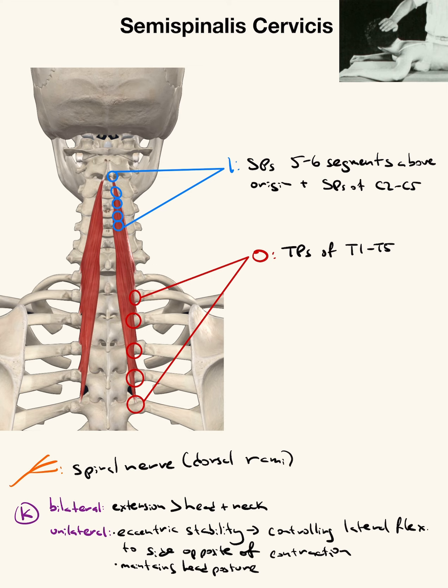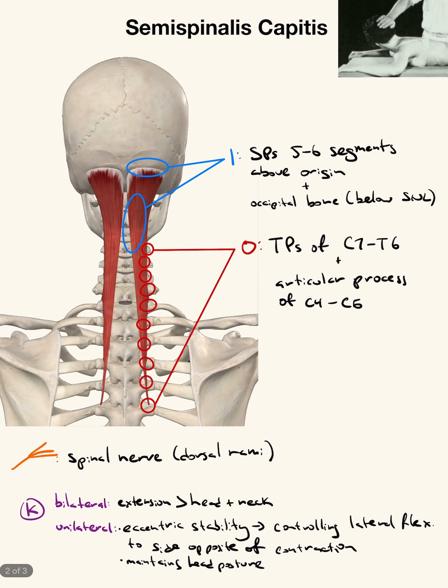Again, innervation is the dorsal rami of the spinal nerve. Actions are extension, eccentric stability, controlling lateral flexion, and maintaining head posture. Same muscle test. I have absolutely no tricks to remember this.